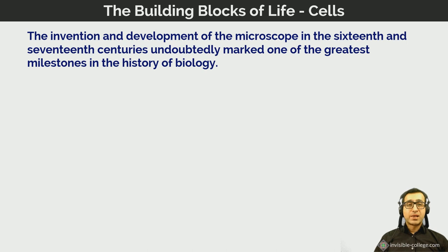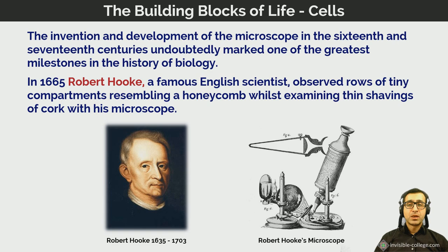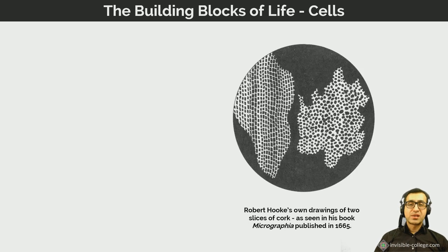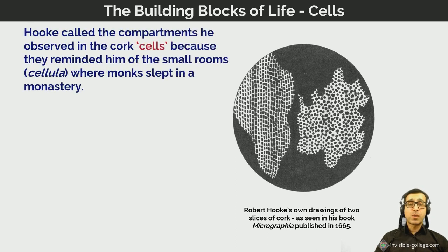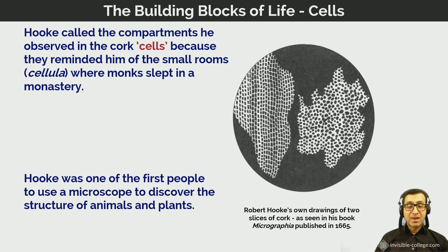Hooke made his discoveries while examining very thin shavings of cork under a microscope he himself built. He made very detailed drawings of what he saw. Hooke called the compartments he observed in the cork 'cells' because they reminded him of the small rooms where monks slept in monasteries, which were called 'cellulae'. This is where we get the word cell from, and Hooke was one of the first people to discover that living organisms are composed of these smaller fundamental living units.